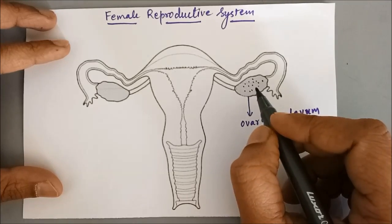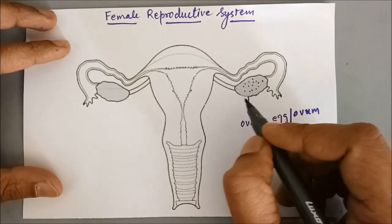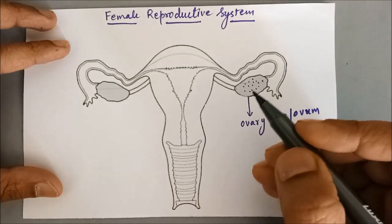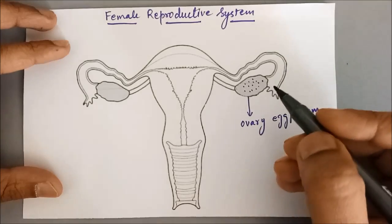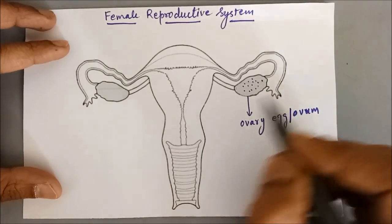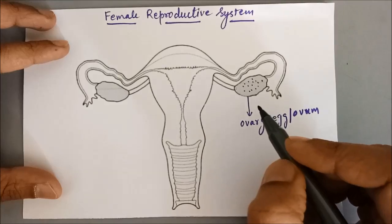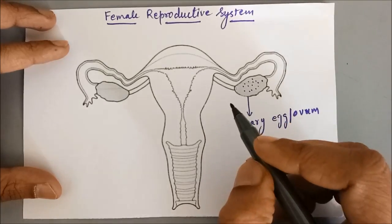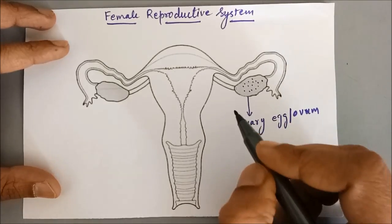Whereas in males, the sperms are only being produced after or during puberty. They are not already present in boys at birth.